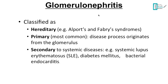Now let's talk about glomerular nephritis — basically any disease affecting the glomerulus. It is classified according to cause into hereditary, primary, and secondary. The most common of those three is the primary one. For hereditary we have Alport and Fabry syndromes. For primary, any disease which originates from the glomerulus itself. For secondary, systemic diseases that affect the glomerulus — we have systemic lupus, diabetes mellitus, and bacterial endocarditis.